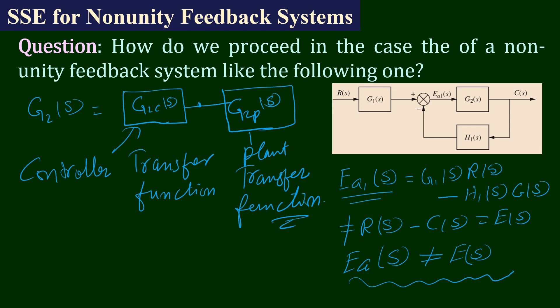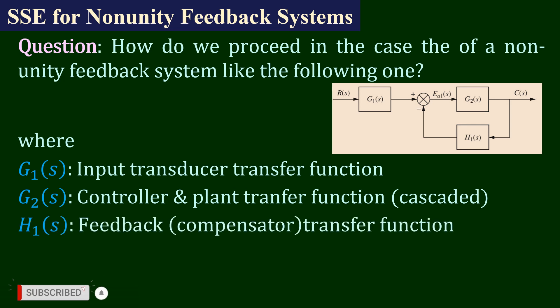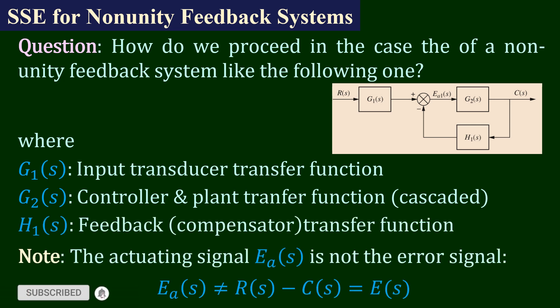One solution is: if we can convert this whole block diagram into the standard unity feedback diagram, then whatever we have studied in the previous seven lectures can be directly applied for the analysis of this type of structure. In the rest of the lecture we will discuss how we can convert this closed loop to the standard unity feedback system. The transfer functions G1(s), G2(s), H1(s), and E_A(s) have already been defined.